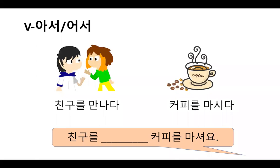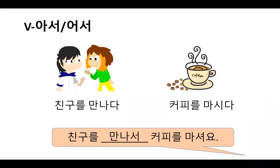Let's look at some example sentences. 친구를 만나다 and 커피를 마시다 — connect those using 아서 or 어서. This shows the continuous nature of two actions. 만나 has a vowel 아, so use 아서: 친구를 만나서 커피를 마셔요. So I meet my friend and we drink a coffee.